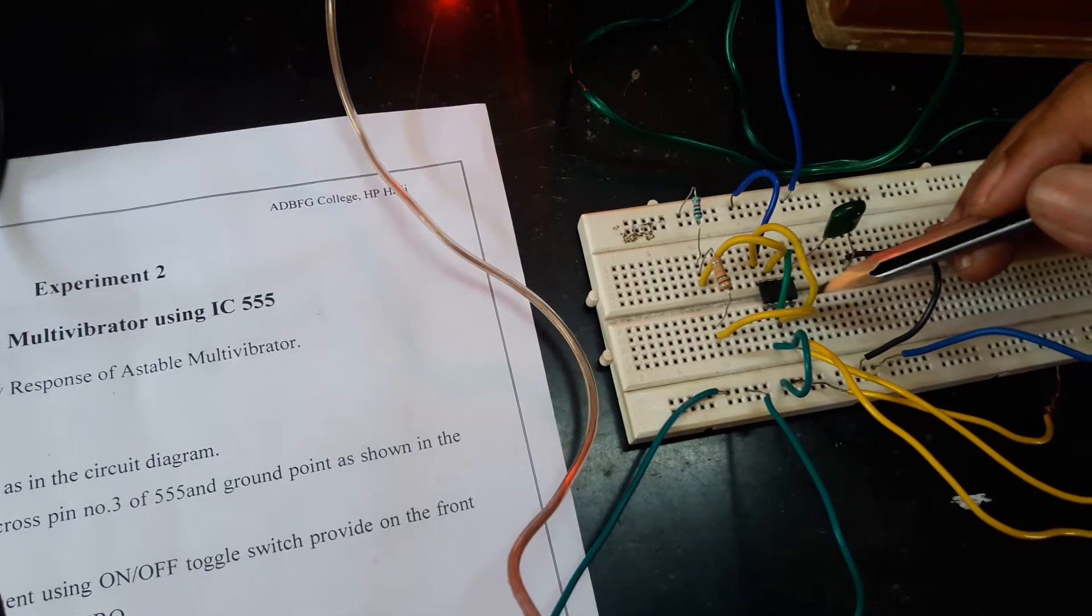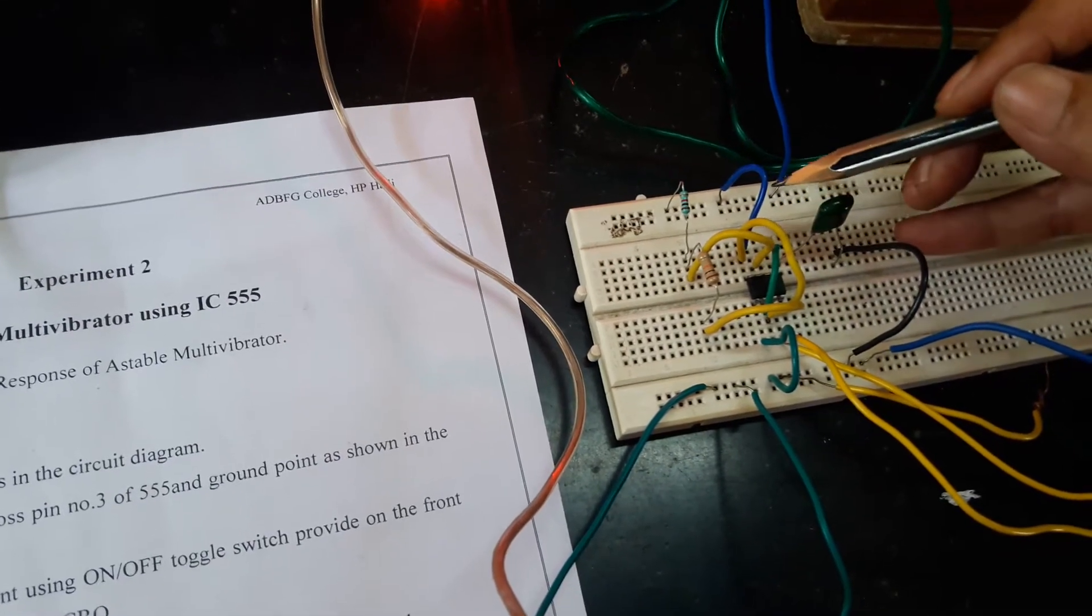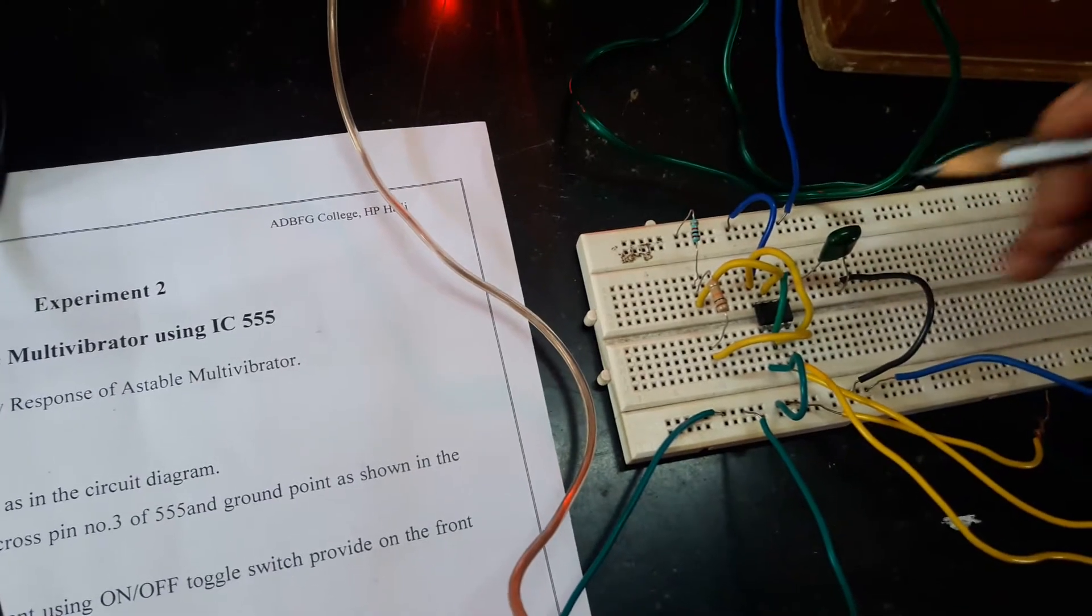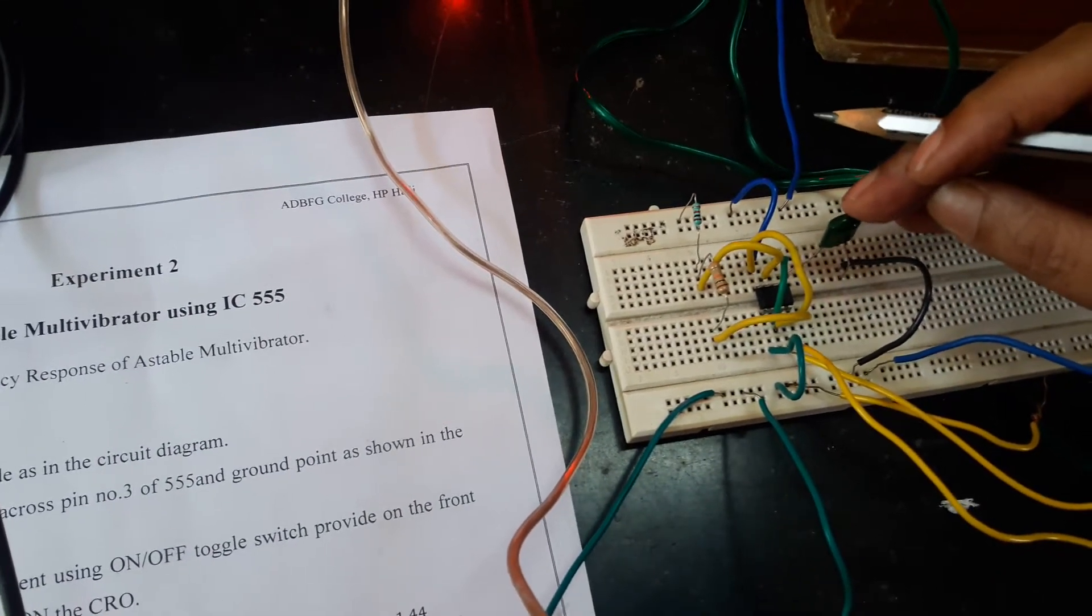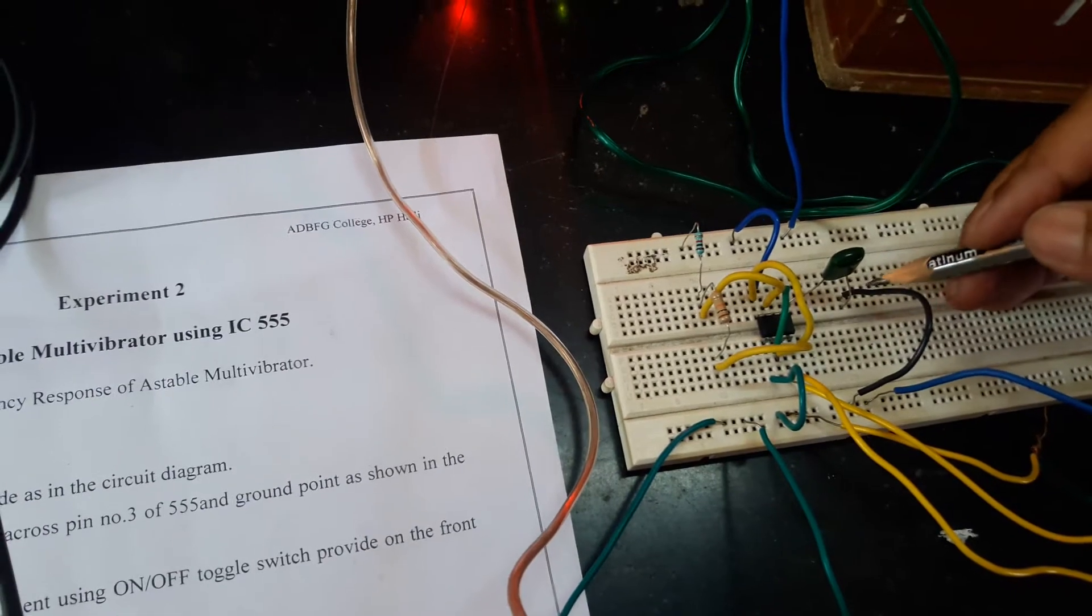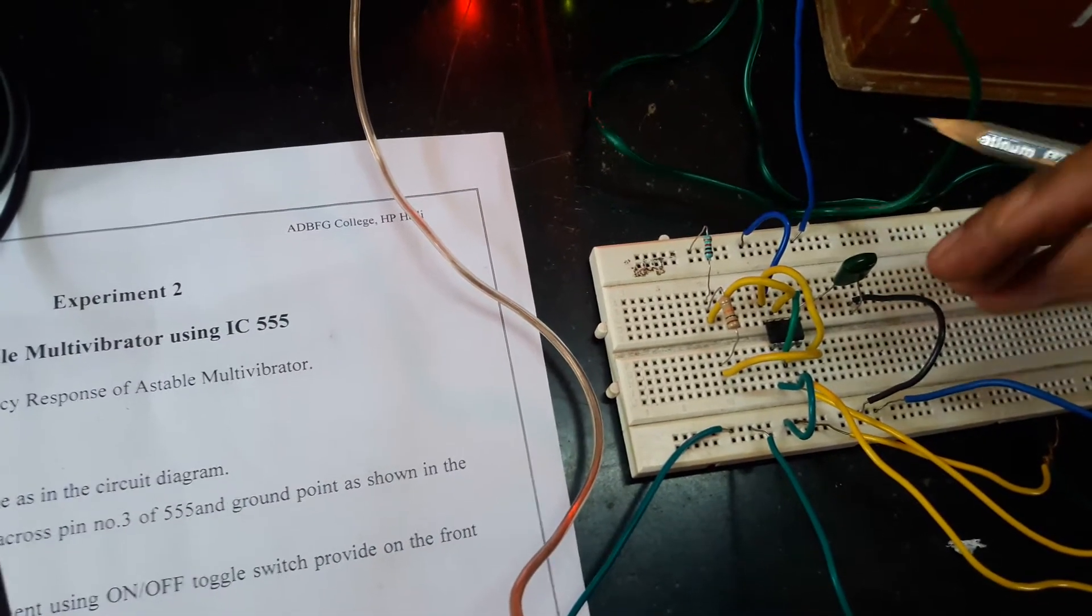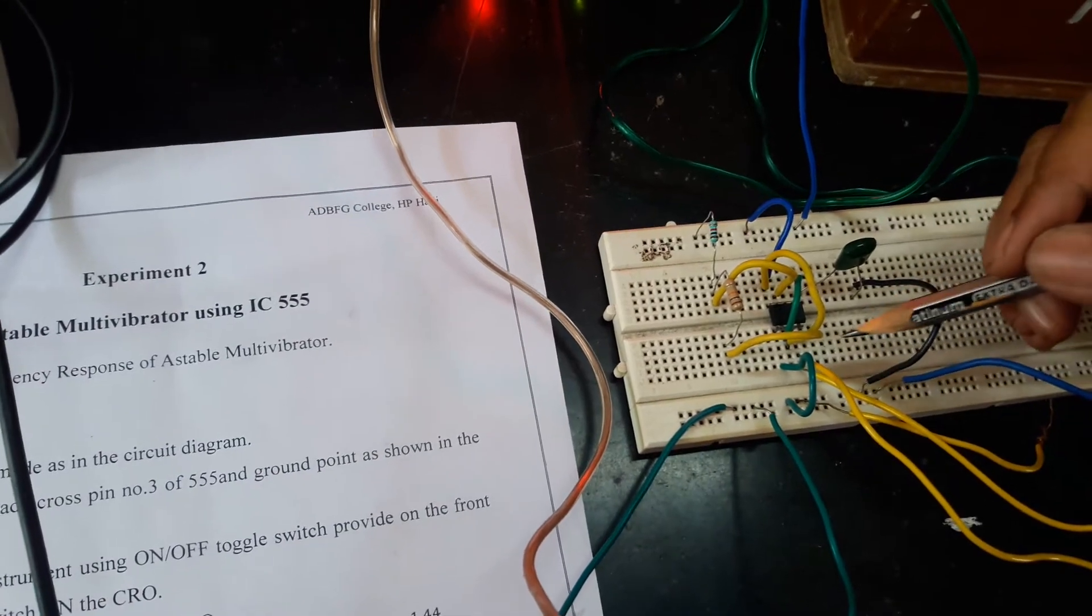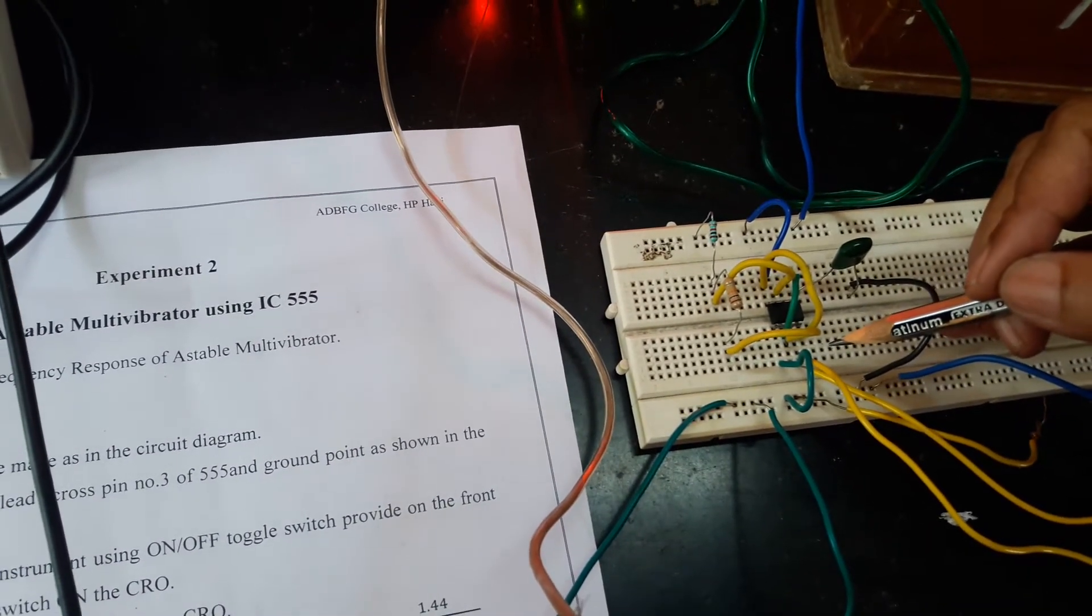Pin number 4 is given to pin number 8 and from pin number 8, it is given to plus Vcc. From pin number 5, the capacitor 0.1 microfarad should be connected, another end of the capacitor should be grounded here and pin number 3, across the pin number 3, we have to find out the output.